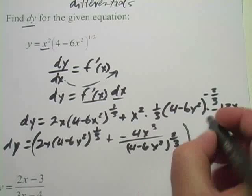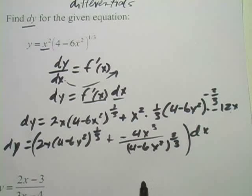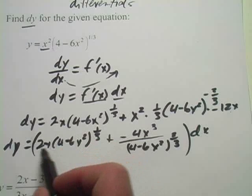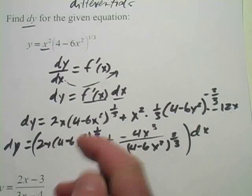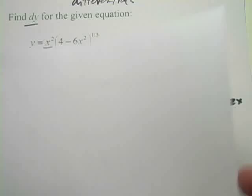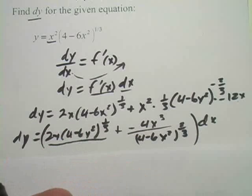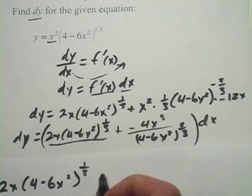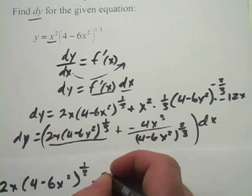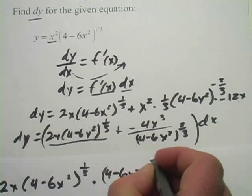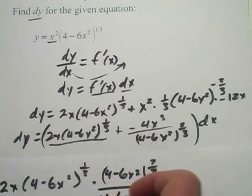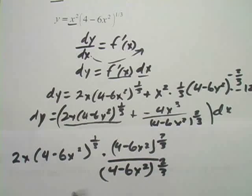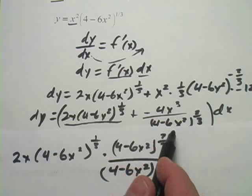Remember, all of this will be times dx. We can do more simplifying if we get a common denominator. Let's multiply this chunk, which is 2x(4-6x²)^(1/3), by (4-6x²)^(2/3) over (4-6x²)^(2/3). I'm multiplying by 1, so that doesn't change the value.